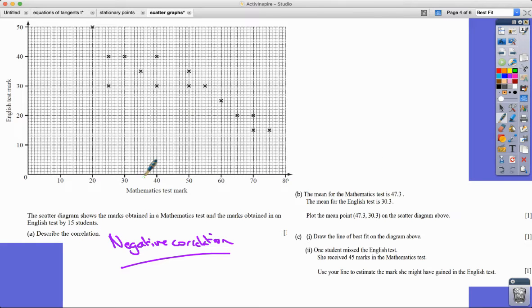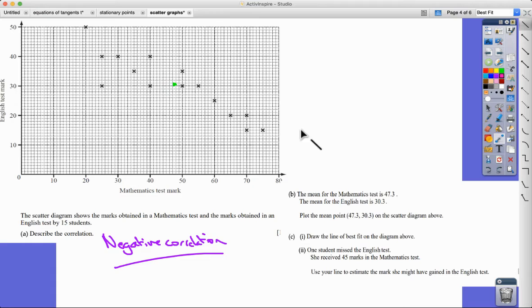The mean for the maths test is 47.3 and the mean for the English test is 30.3. Plot the mean points. Let's have a look—47, the 0.3, and 30.3 is a bit more challenging on here, but I think somewhere like there I think. The thing about this next question, it says draw the line of best fit on the diagram above. What happens is if you actually do plot the mean point like this, it's important that your line of best fit does actually pass through that mean point.